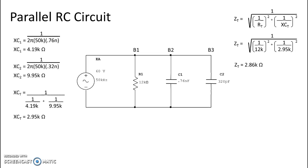Once we have impedance, we can get our current. Current is just voltage divided by impedance, and that gives us 20.98 milliamps of total current.